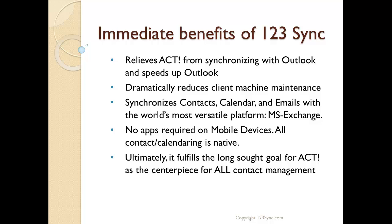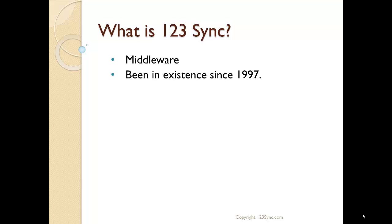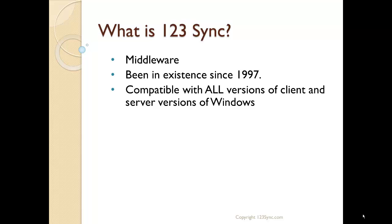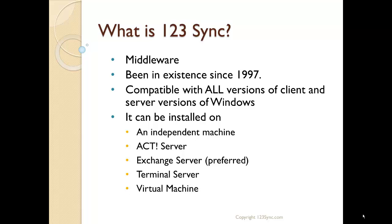All the information — emails, contacts, calendaring — is synchronized with all mobile devices in your corporation. To recap: 123Sync is middleware that has been in existence since 1997. It is compatible with all versions of client and server versions of Windows. It can be installed on an independent machine, an ACT server, an Exchange server (which we prefer), a terminal server, or a virtual machine.